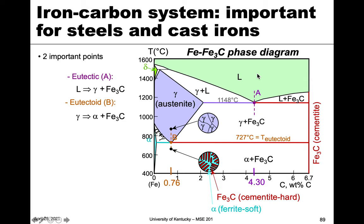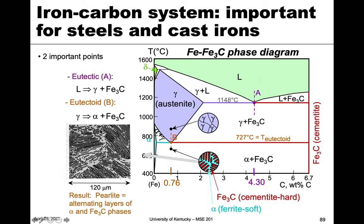This is basically like the lamellar structure that we saw with the eutectic, but the starting phase is a solid instead of a liquid — that's the main difference to consider. This is an actual image of this eutectoid mixture of alpha ferrite and Fe3C or cementite. Because it has this very pronounced lamellar layered structure, just like eutectic, we call this pearlite. This mixture of the two is called pearlite in the steel system, so you might hear the term pearlite or pearlitic steel — that refers to the presence of pearlite, which is itself a mixture of alpha and Fe3C.